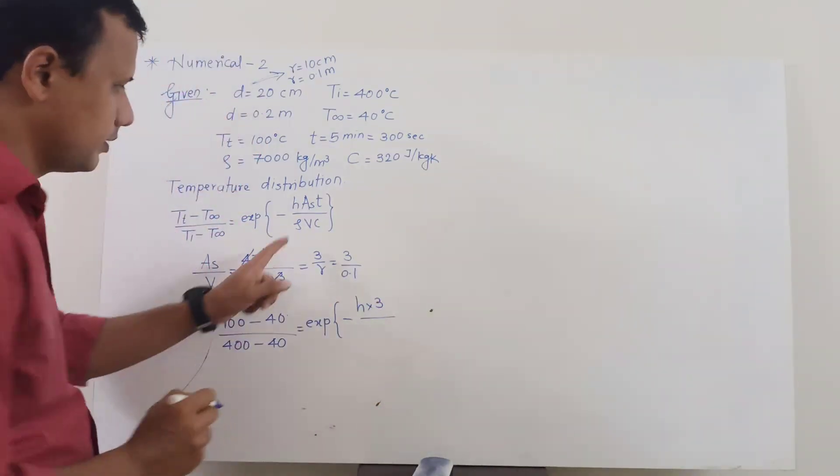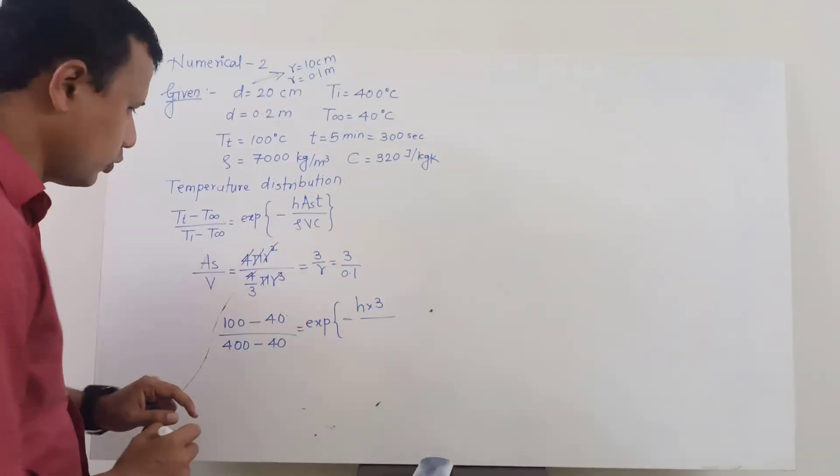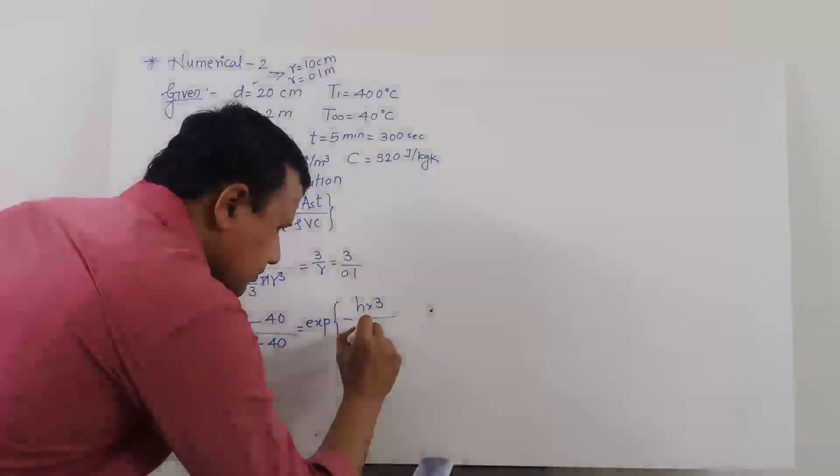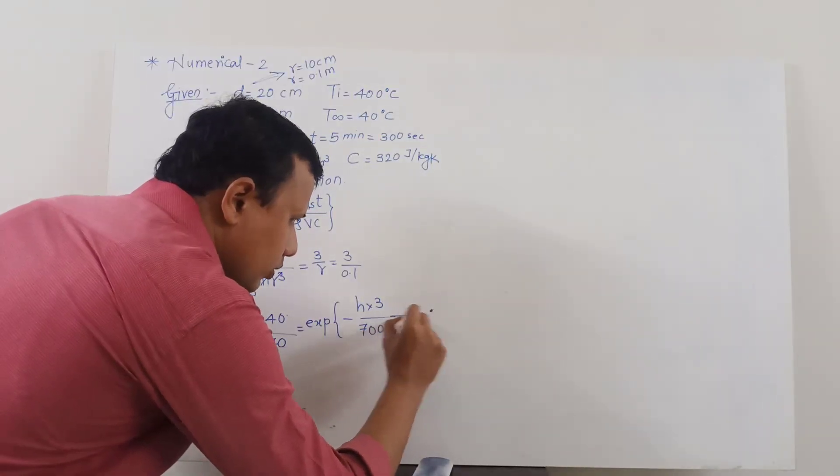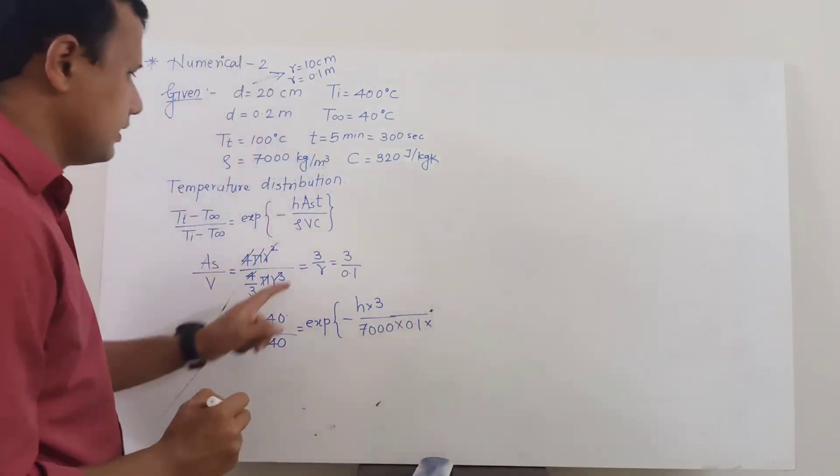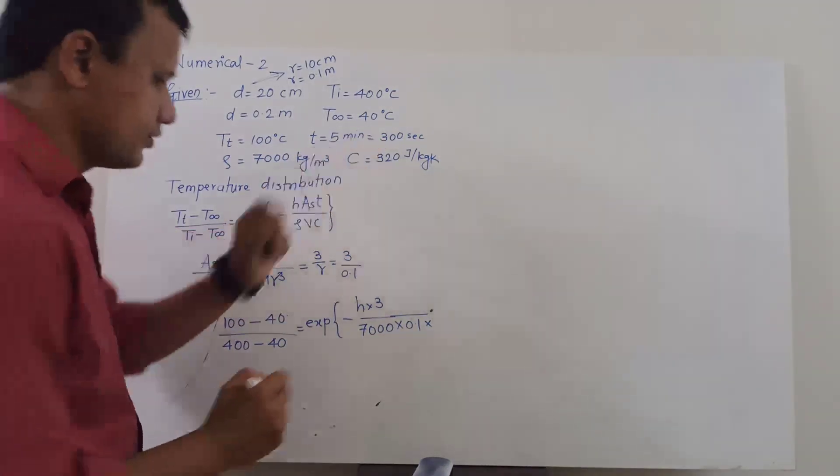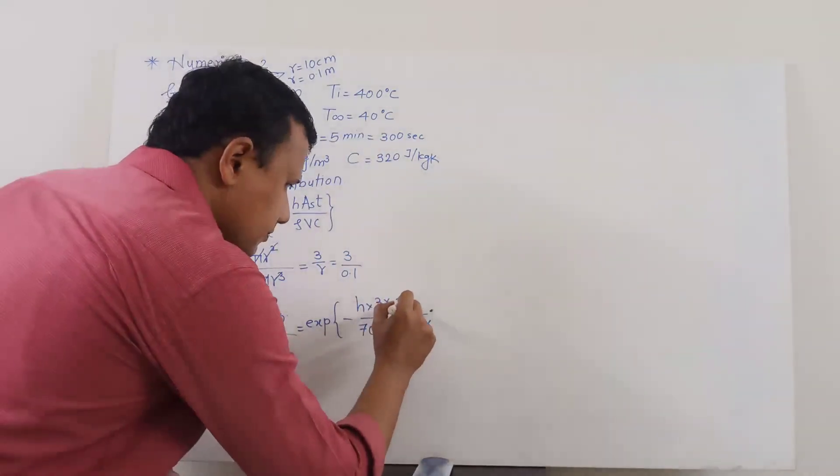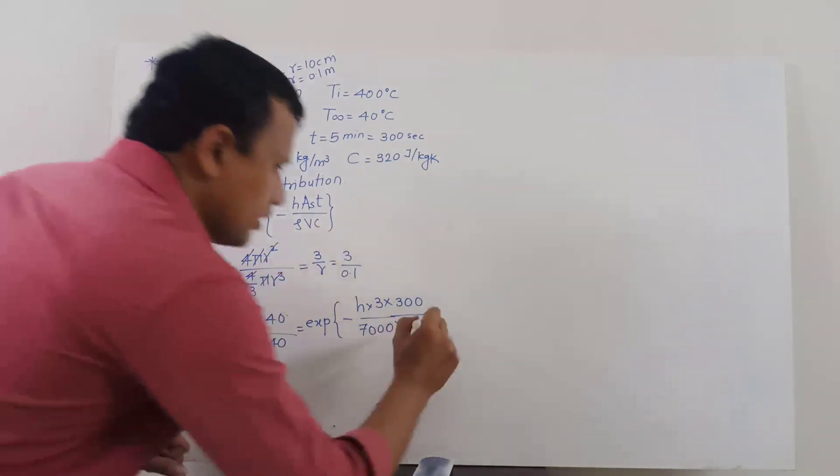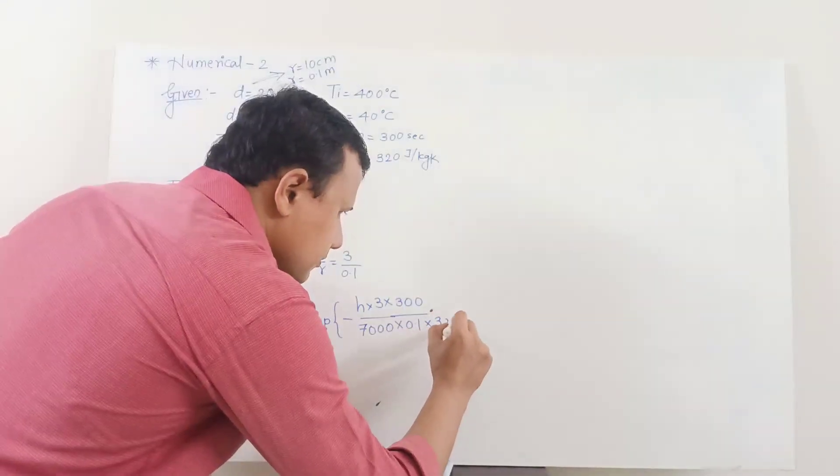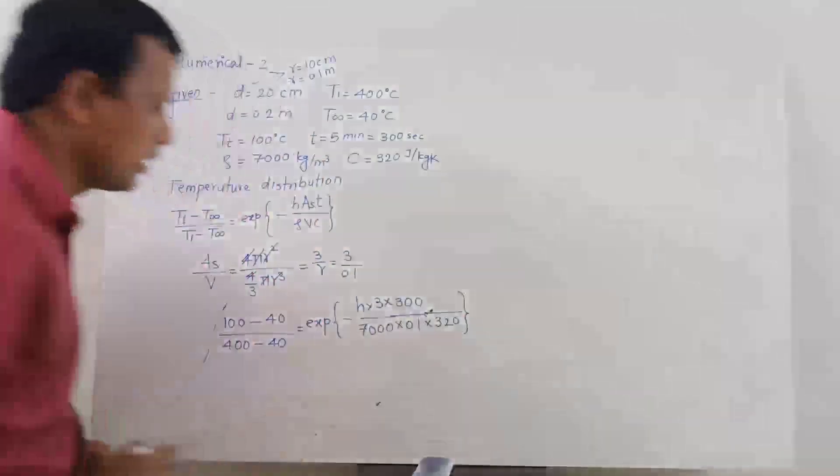It is equal to exponential of h is unknown and then A_s upon V is already known to us, multiplied by 3 divided by 0.1, but before that I will write the value of rho, the density is 7000 multiplied by 0.1 multiplied by this time t is known to me it is 300 seconds and finally the specific heat is 320.